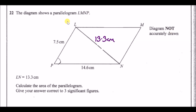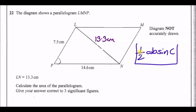Number 22: the diagram shows a parallelogram LMNP with some lengths given, and LN = 13.3. We want to calculate the area. By splitting the parallelogram into two identical triangles and doubling, we can use the triangle area formula: half ab sin C, which is given at the front of the book.